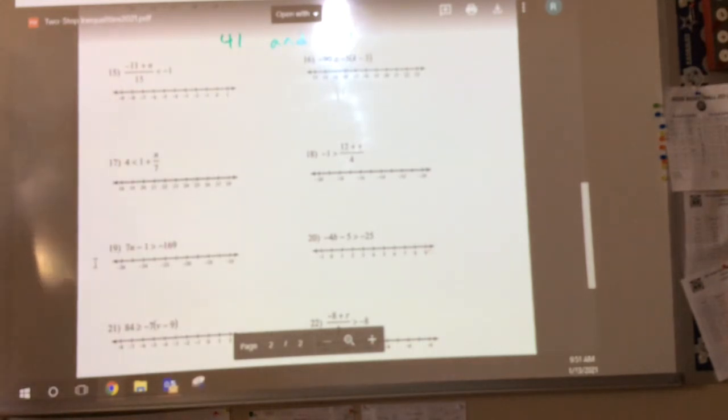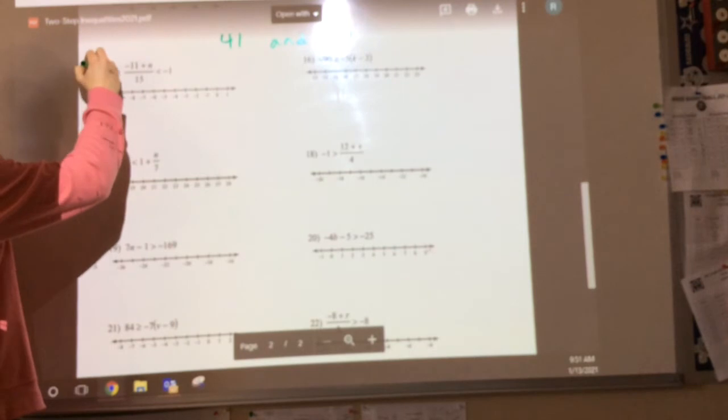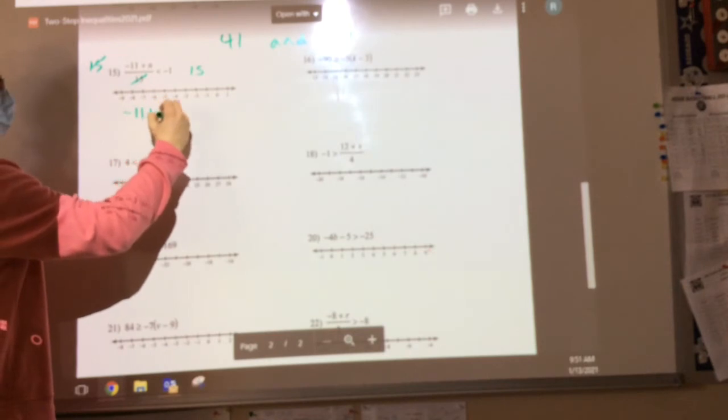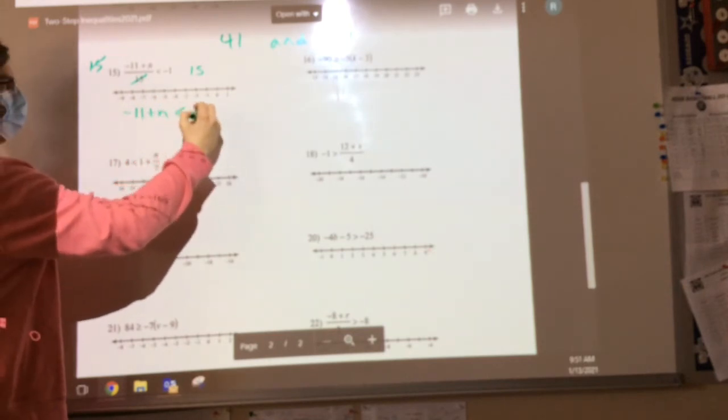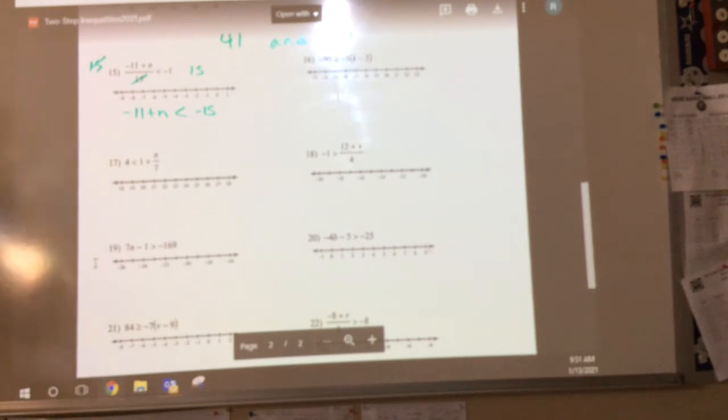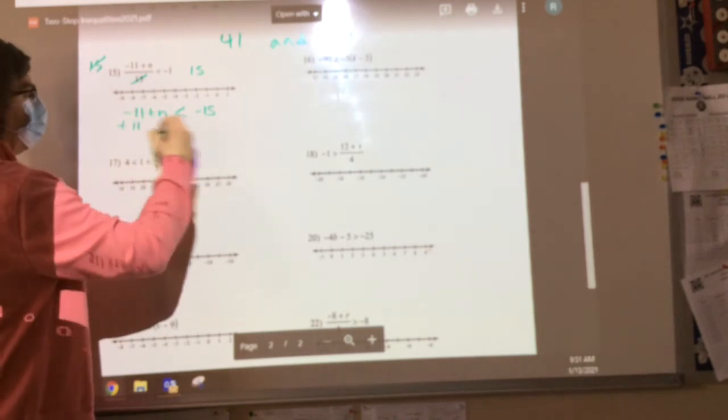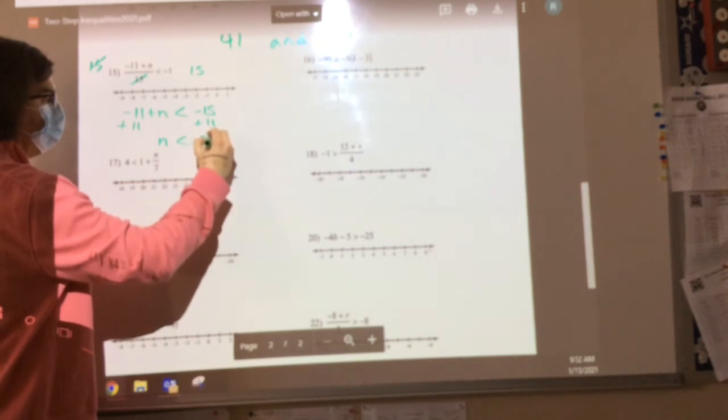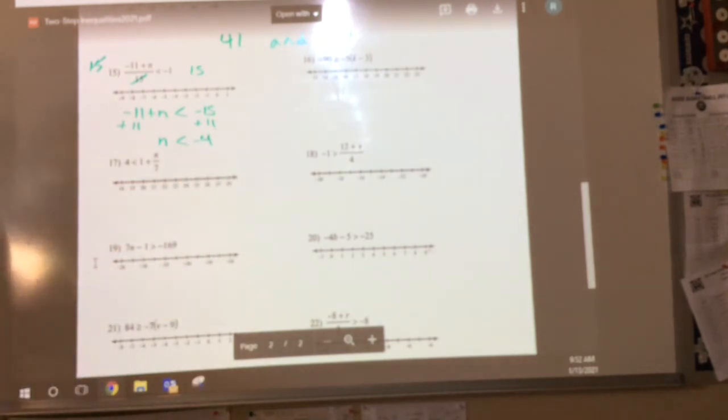Uh, flip it. I'll flip it yet. We'll get there. Jackson? Divide 15. Multiply both sides by 15. Multiply both sides by 15. These cancel out, leaving me with negative 11 plus n is less than negative 15. Are we good with that step? Addison, what's next? We're going to subtract 11. We're not going to subtract 11 because it's already a negative, and we're going to add it. I'm going to find that n is less than negative 4. Are we okay there?